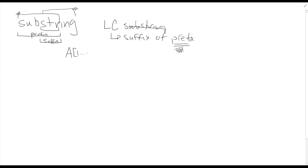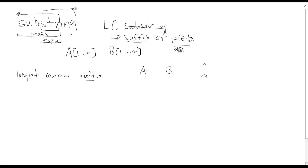Let's think about the longest common suffix problem for a second. If we just have strings A and B and all we want is the longest common suffix, we simply start at the end of each one — positions N and M — and check: if they're equal, move to N minus one and M minus one; if they're not equal, we're done. That's the longest common suffix, and it's usually zero for most string pairs. It's easy to find — but that's not actually the problem we're trying to solve. We want the longest common suffix of every pair of prefixes. That's the important bit.